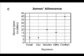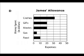Now let's look at C. C is a line graph. On this one we have $8 worth of food, $8 worth of gas, $20 worth of movies, $16 worth of gifts, and $40 worth of clothes. So you know this one's wrong — let's eliminate this one too.